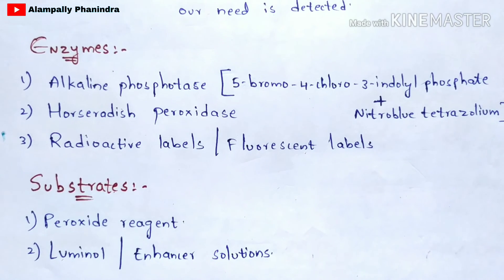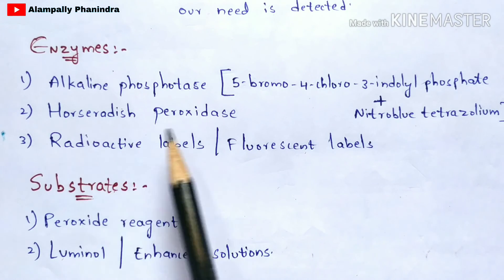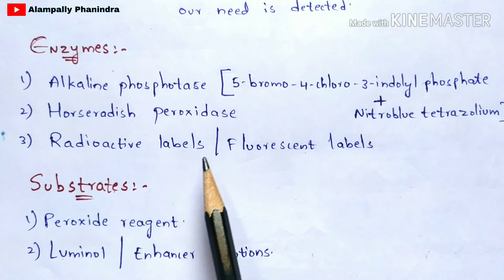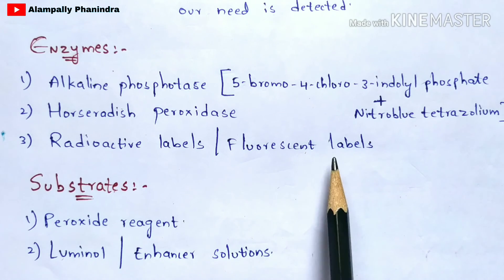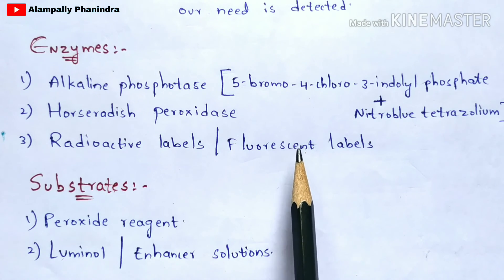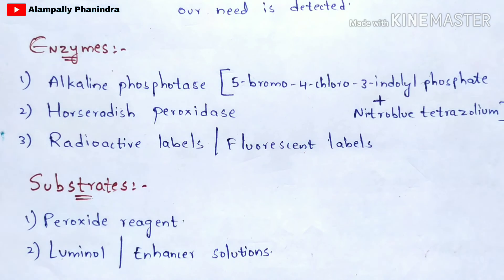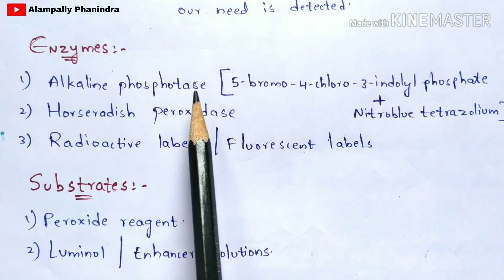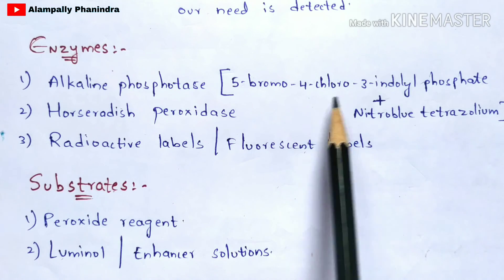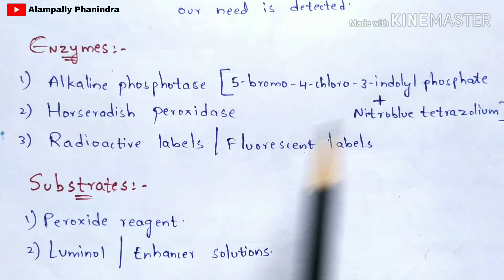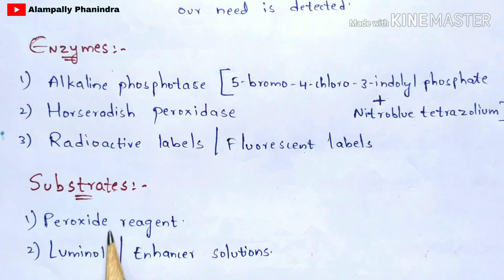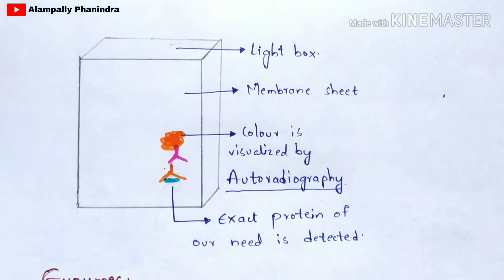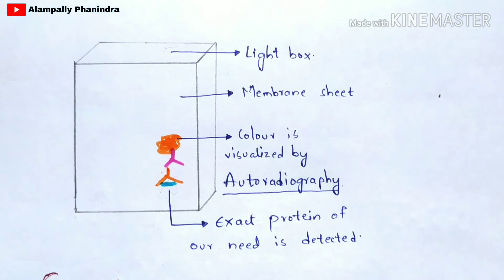The enzymes used in Western blotting include alkaline phosphatase, horseradish peroxidase, and radioactive or fluorescent labels. Note that enzymatic reaction occurs only for enzymes, not for labels. Alkaline phosphatase is prepared using a combination of 5-bromo-4-chloro-3-indolyl phosphate and nitro blue tetrazolium. The substrates used on the membrane sheet include peroxidase reagent, luminol, or NSR solutions, which produce the detectable color.